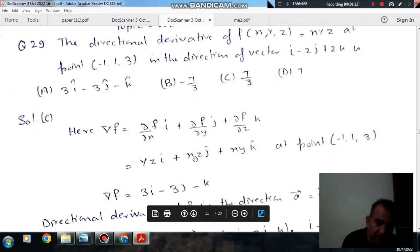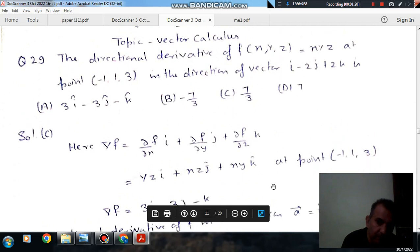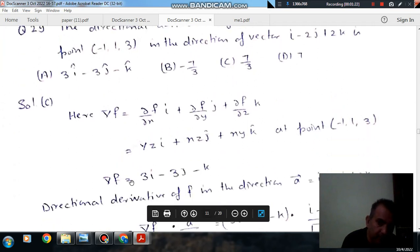So it will be yz i + xz j + xy k. Now at point (-1, 1, 3), del f will be 3i - 3j - k.